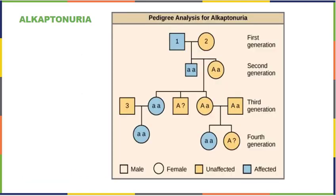In this example pedigree, we have an affected father and his unaffected wife in the first generation — or using Mendel's terms, the P generation. In the F1 generation, those two individuals have one child who is heterozygous recessive. Therefore, the mother must have been heterozygous and just didn't know it. That affected individual married a woman who is also heterozygous, and we can see three children from that union: an unaffected heterozygous female, a male whose zygosity is unknown, and an affected male.